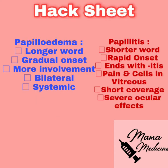To sum up: bilateral optic disc involvement, gradual onset, and systemic involvement means papilledema. Note that papilledema can rarely involve only one optic disc in conditions like pseudo-Kennedy syndrome or Foster-Kennedy syndrome with frontal lobe tumors, but these are rare and unlikely to appear in standard exams.